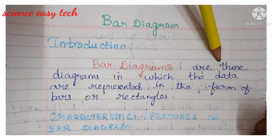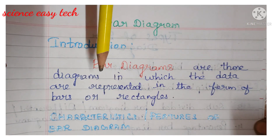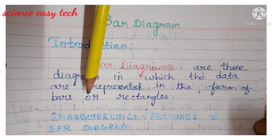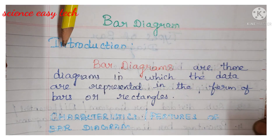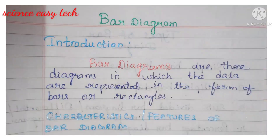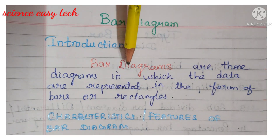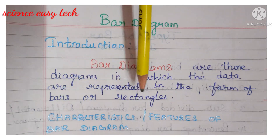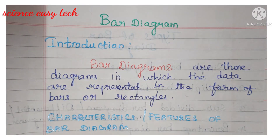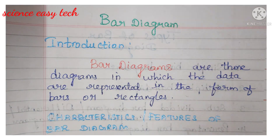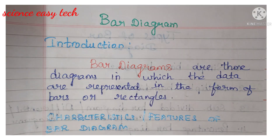Introduction: bar diagrams are those diagrams in which the data are represented in the form of bars or rectangles. The diagram will be represented in the form of either bars or rectangles — that's why it is called a bar diagram. It is otherwise called a bar diagram, bar graph, or bar chart. Whatever they are asking, you have to write only this answer.